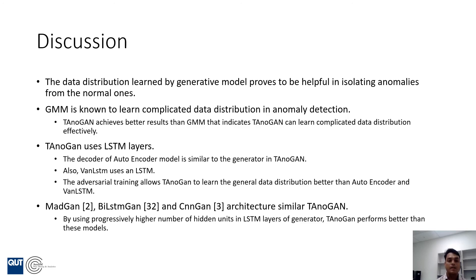MATGAN, BLSTM GAN, and CNN GAN have a similar architecture to our TANUGAN. However, our TANUGAN model uses a progressively larger number of hidden units in the generator part, and this allows TANUGAN to learn the underlying distribution more effectively when the dataset is small.